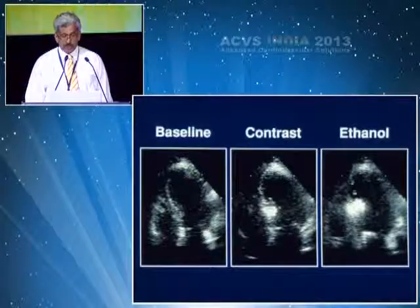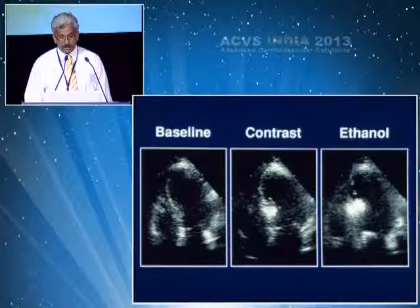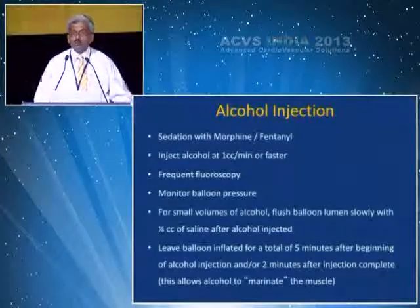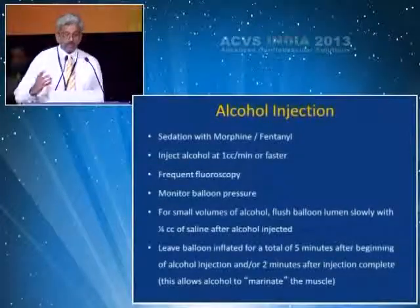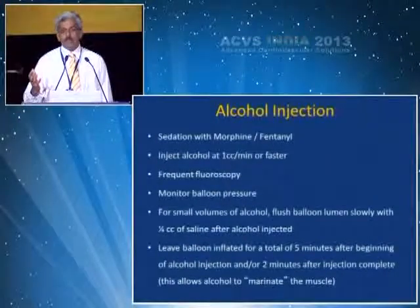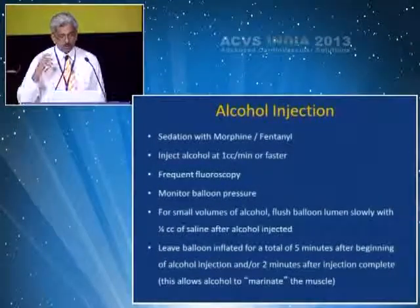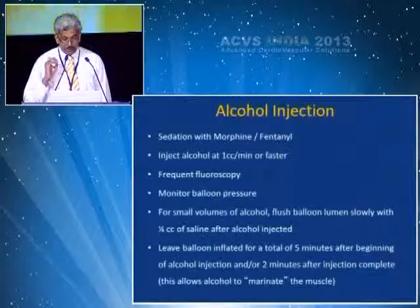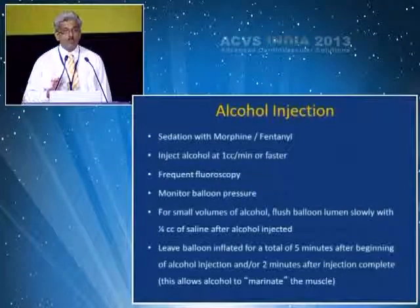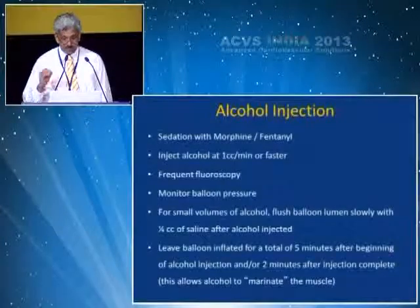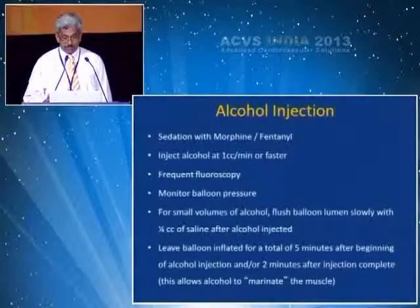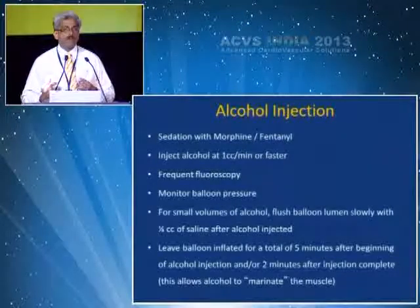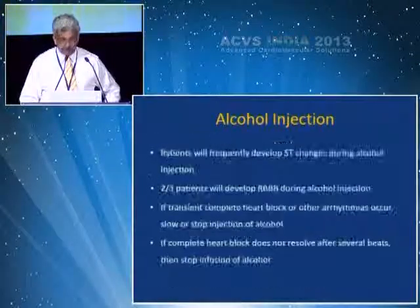The contrast echo clearly shows the contrast going into the right point of the septum and the ethanol going in the right place. Alcohol injection should be preceded with morphine or fentanyl so patients do not experience chest pain. Inject alcohol at 1cc per minute under frequent fluoroscopy, monitoring blood pressure with small volumes of alcohol slowly, and flush with 0.25cc of saline after alcohol injection. Leave the balloon inflated for a total of five minutes after beginning of alcohol delivery, and two minutes after the injection, to allow the alcohol to adequately infuse the muscle and create a clear large infarct.